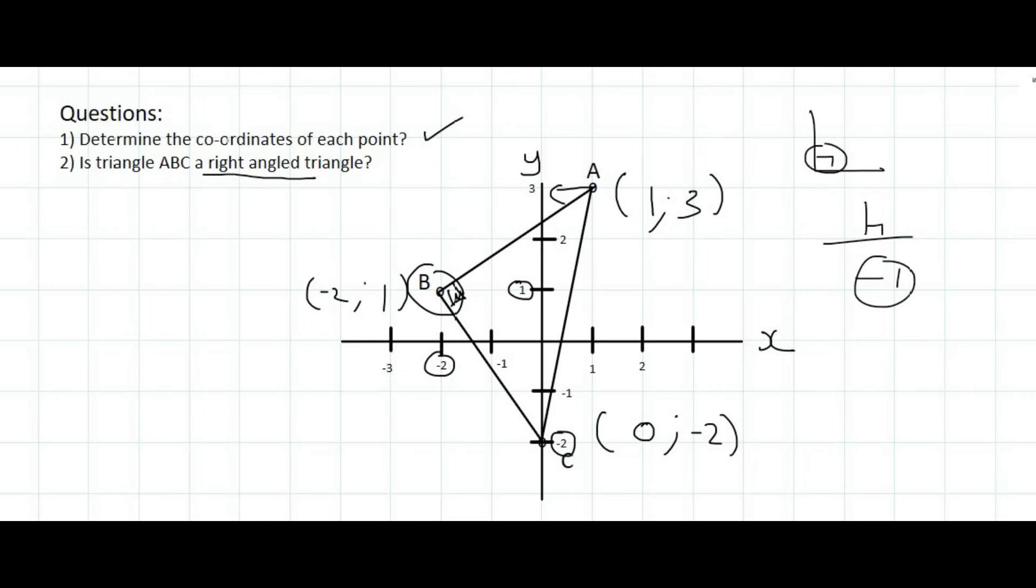So let's look at the gradient of AB. So the way we show that is we say M, which stands for gradient, of AB, is equal to, and then luckily we have a gradient formula. And so there we go. I'm going to use point A as point number 2, and I'm going to use point B as point number 1.